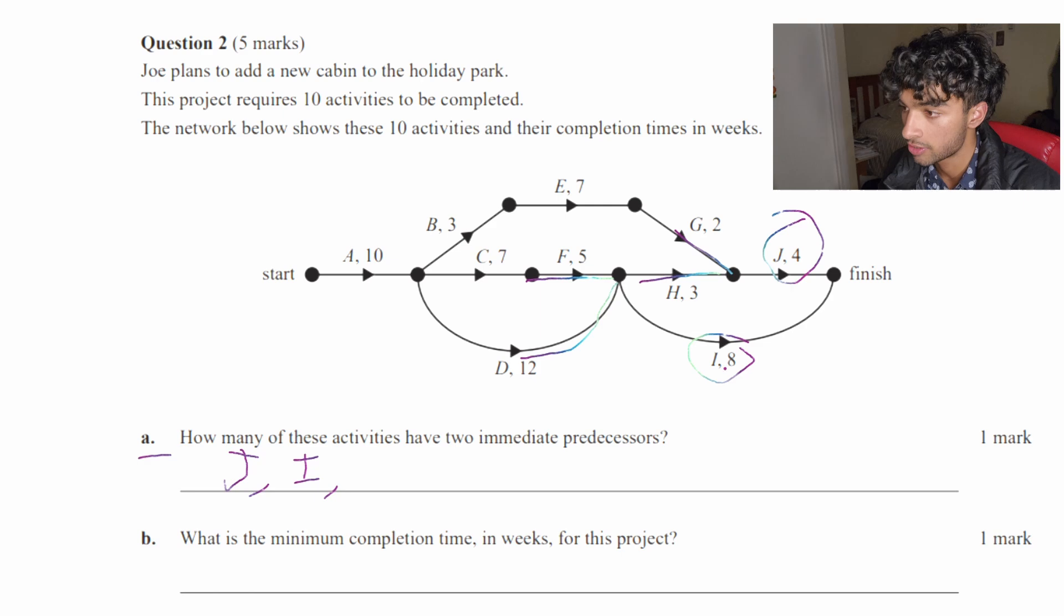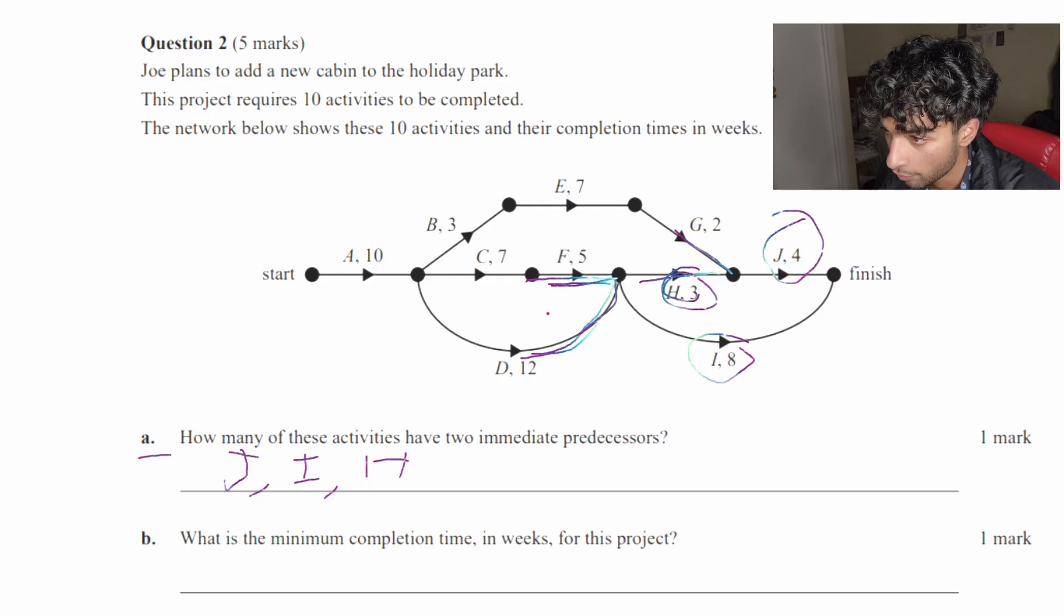And it's really hard to see if this one actually has two predecessors because there's a curve and people don't really see that curve that much. And with activity H as well, it has two predecessors. And as we go through the graph, you can double check if there's any other predecessors where there's two predecessors, and there is not. So it's just these three: one, two, three. So three activities.